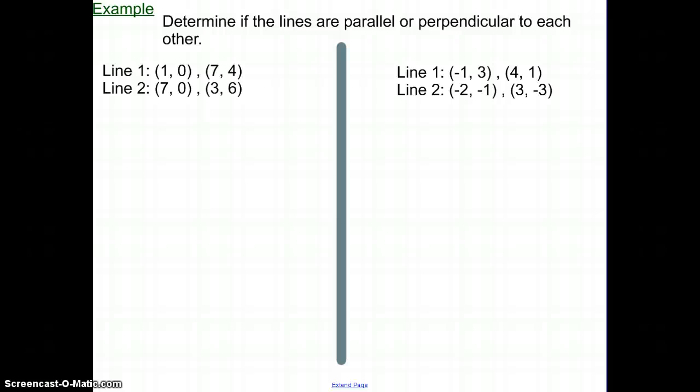The next example: determine if the lines are parallel or perpendicular to each other. For parallel, we're looking for equal slopes. For perpendicular, we're looking for opposite reciprocals. We're just going to find the slope of each line. The slope of line 1: difference in the y values, we're going from 4 to 0, and then for the x values, we're going from 7 to 1. So that is -4 over -6, which simplifies to 2/3.